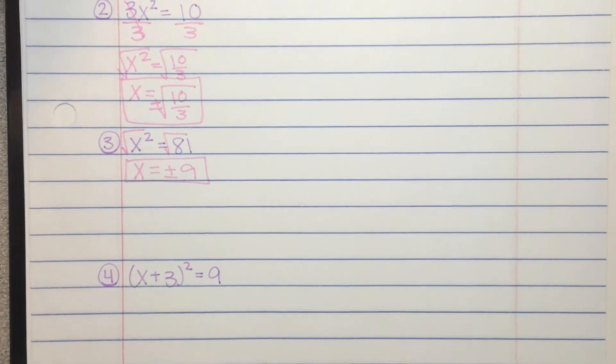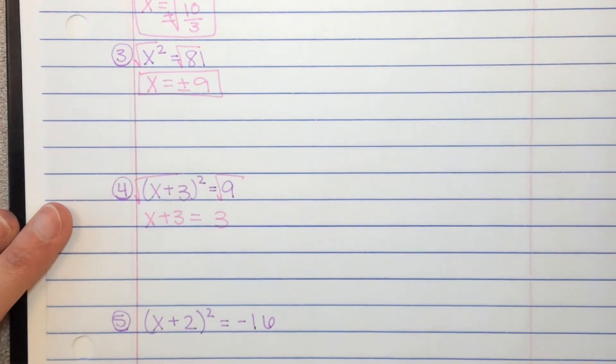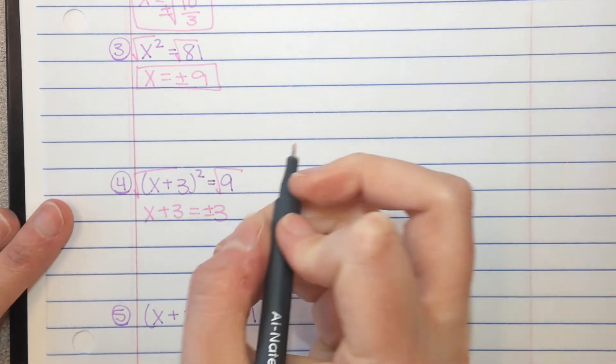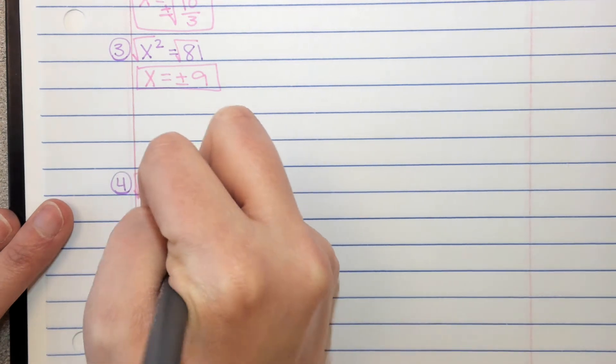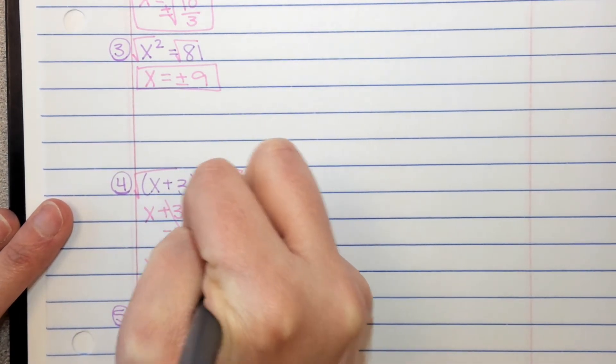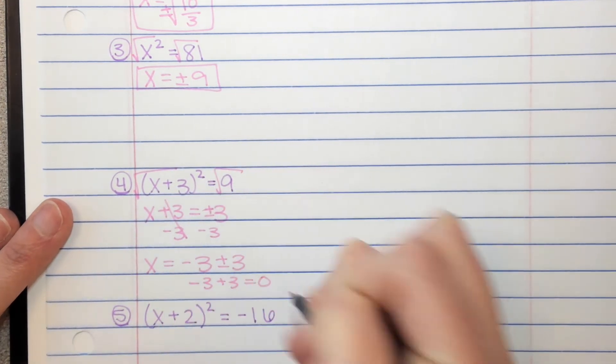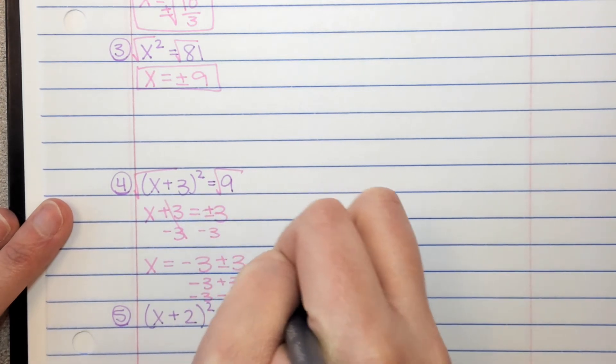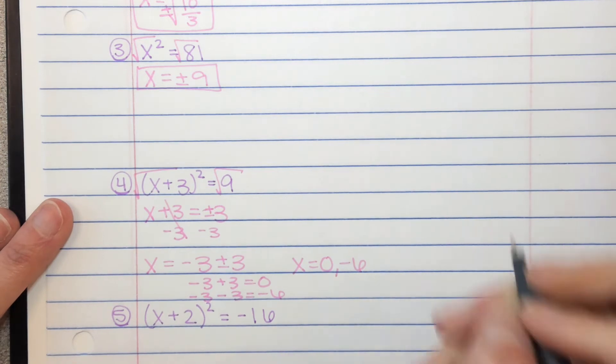Number 4 is a little bit different. You're going to square root both sides and you're left with x plus 3 equals plus or minus 3. Sorry, I keep forgetting that. And so we have to subtract 3 from both sides. So we have x equals negative 3 plus or minus 3. So negative 3 plus 3 is 0, and negative 3 minus 3 is negative 6. So there your answers are 0 and negative 6.